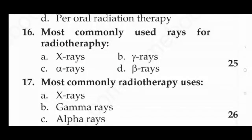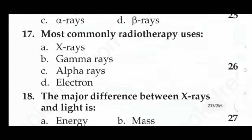Next question: most commonly used rays for radiotherapy — option A: X-rays, option B: alpha rays, option C: gamma rays, option D: beta rays. The answer is option A — the most commonly used rays for radiotherapy are X-rays.